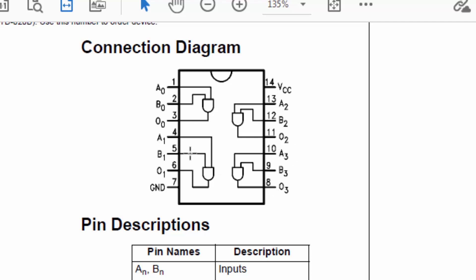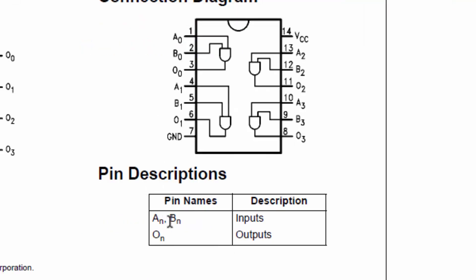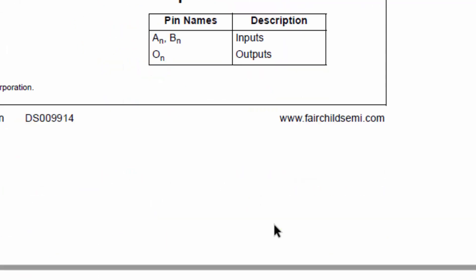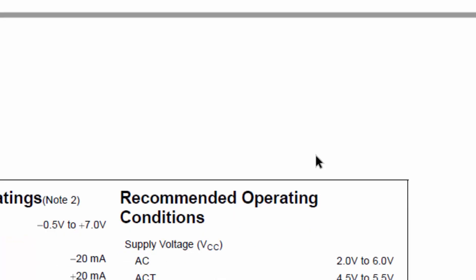So this is its configuration: pin 14 is positive VCC, pin 7 is ground. A dot B, A multiply by B, that is the input. It has dot function. We will discuss in detail how it is working.